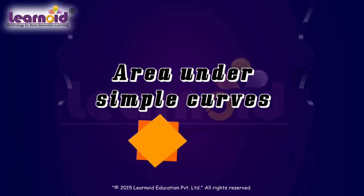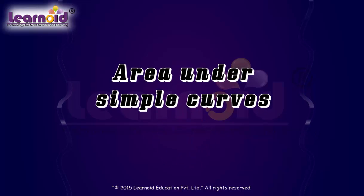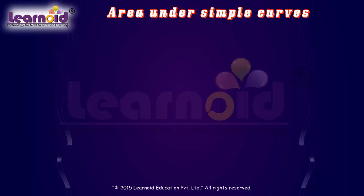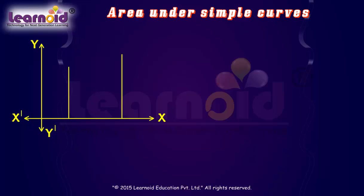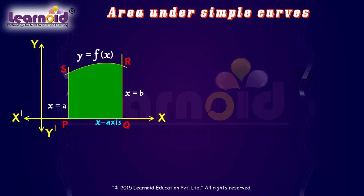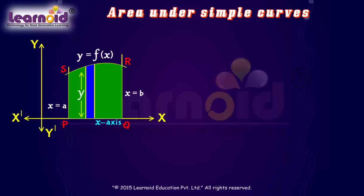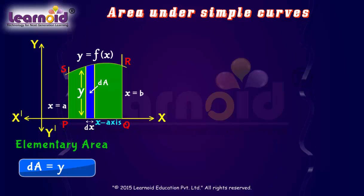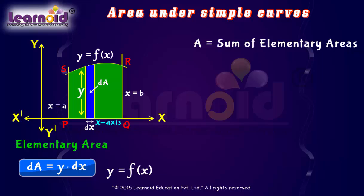Area under simple curves. In the previous lessons we have learned that the definite integral represents the area bounded by the curve y = f(x), x = a, x = b, and the x-axis. We can think of the complete area PQRS as consisting of a large number of very thin vertical strips. Let us consider an arbitrary strip of height y and width dx. The area of the elementary strip dA is equal to y·dx, where y is a function of x.